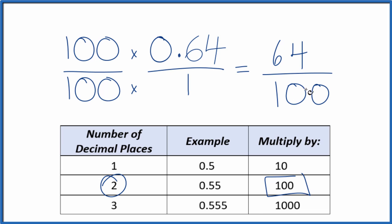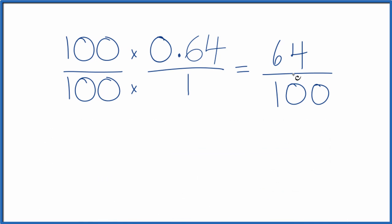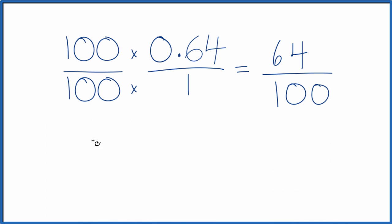But we can reduce this further. These are both even numbers. So let's give ourselves some room here. And 64 divided by 2, that's 32. 100 by 2, that's 50.